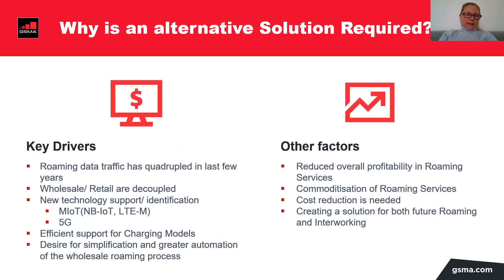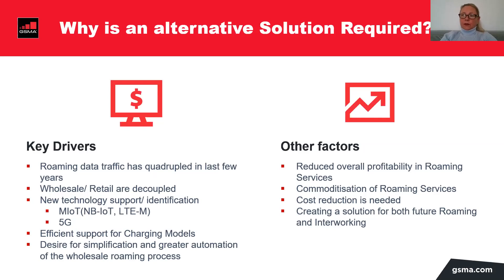We also know that roaming data has grown immensely in the last few years. For most operators, wholesale and retail are decoupled, new technologies are evolving, and 5G roaming is already taking place, as is narrowband IoT and LTM. So another efficient support for charging models that support these services was needed, as was the desire for simplification and automation. Other factors include that roaming has become a commodity service, not to mention that in the last months it was almost non-existent. There was cost reduction needed because operators do not make as much money as they used to, and a solution for both future roaming and interworking was needed.